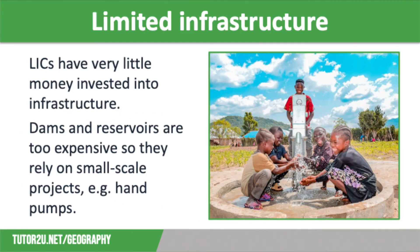The final cause of water insecurity is limited infrastructure. Many low-income countries have very little money invested into the infrastructure needed to provide and maintain a decent water supply, making collecting and delivering water difficult. Even in high-income countries, huge amounts of water are lost — in the UK, one-fifth of all water is wasted through leakage, making it the second biggest use of water after households. Dams and reservoirs are far too expensive, so communities in low-income countries are often reliant on small-scale projects such as hand pumps, which are effective at providing a safe water supply but only serve a small number of people.